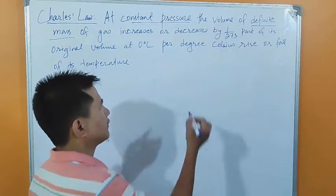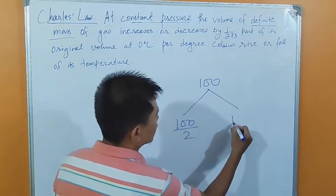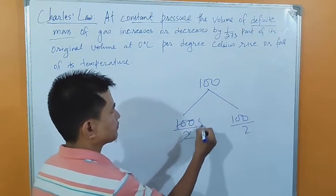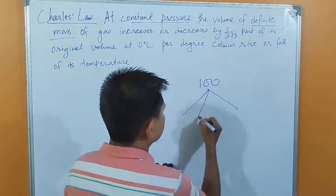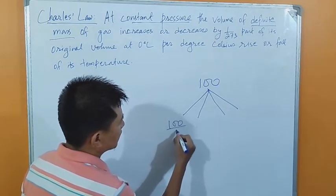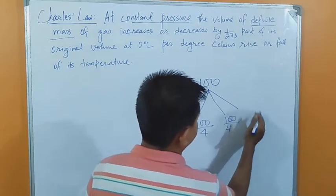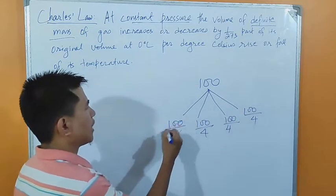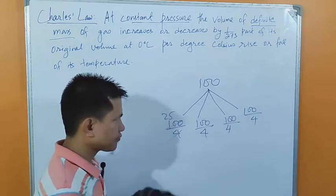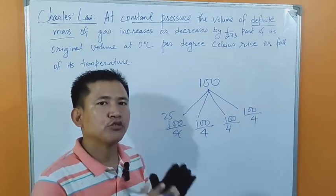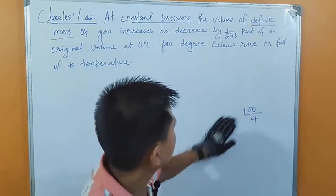Before understanding Charles Law, let us first understand fractions. If 100 is divided into two parts, the value of each part will be 100 divided by 2, that is 50. If 100 is divided into four parts, the value of each part will be 100 divided by 4, which is 25. Into however many parts you are dividing, that many numbers should be in the denominator.